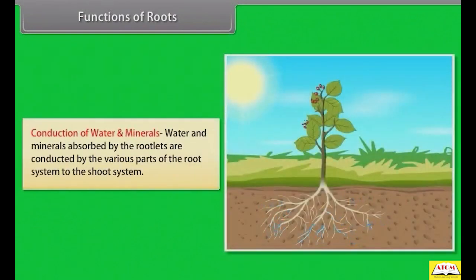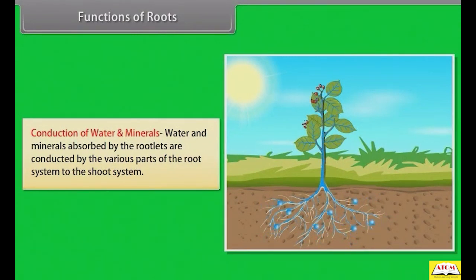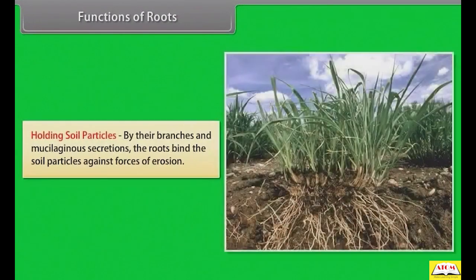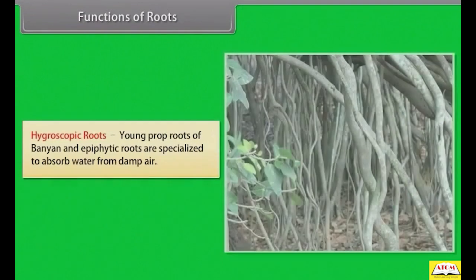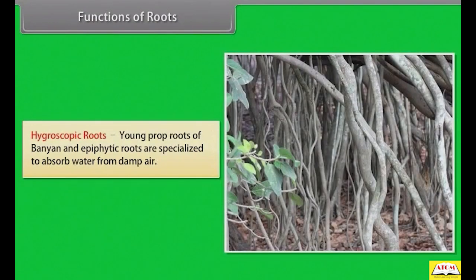Water and minerals absorbed by the rootlets are conducted by the various parts of the root system to the shoot system. By their branches and mucilaginous secretions, the roots bind the soil particles against forces of erosion.